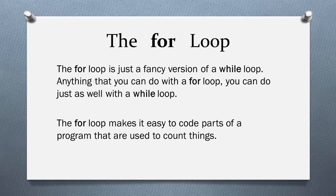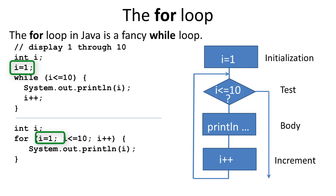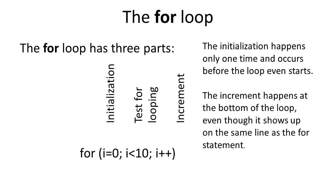The for loop is just a fancy version of a while loop. Anything that you can do with a for loop, you can do just as well with a while loop. The for loop makes it easy to code parts of a program that are used to count things. Here is a comparison between the for loop and the while loop when used to go through the loop a specified number of times. The variable i is declared as an integer, initialized to 1 before the loop starts. The first thing that happens in the loop is the test to see if the body of the loop is to be executed. If the test evaluates to true, the body is executed. The last thing inside the loop is the increment, i++.